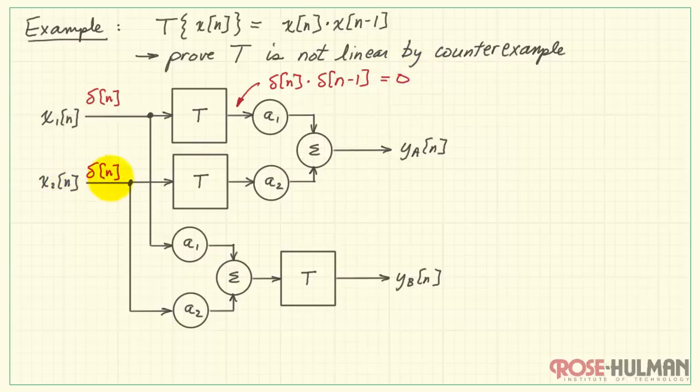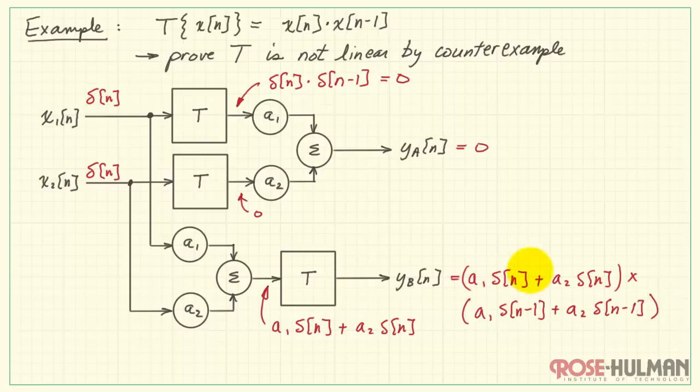Specifically, I've chosen the unit impulse because multiplying the impulse and the delayed version gives you 0 for all values of n. We'll do the same trick down here. That gives us a1 delta of n plus a2 delta of n. Let's pass that through the system and see what happens. So I'll duplicate what I see on the input and then multiply by the delayed version of that input. Let's do the multiplication of these two. And the thing to note is that every single term of the product always involves delta of n times delta of n minus 1. Therefore, we see that yb is 0 for all n.